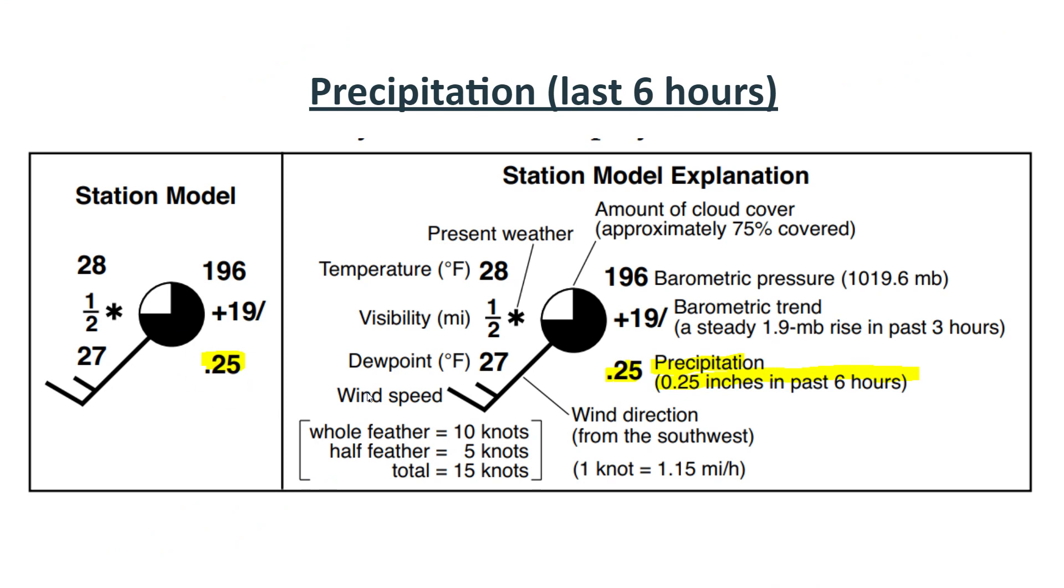So in this case, 0.25 just represents 0.25 inches of precipitation in the past six hours. So whatever number you have here is however many inches of precipitation you have in the past six hours.